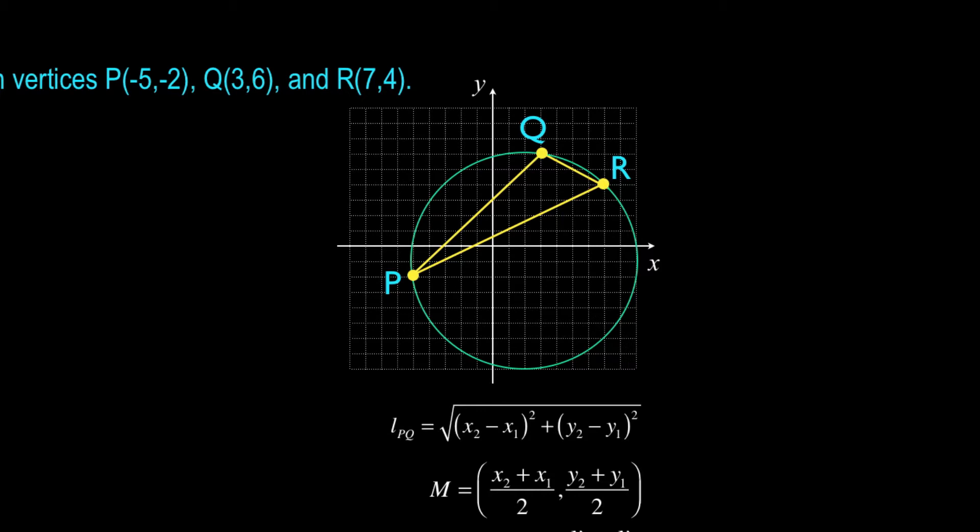The question becomes, how do you locate the center of the circle if you have points P, Q, and R? Well what you need to recognize is that PQ is a chord of the circle, and QR is a chord of the circle, PR is as well, but I'm going to work with the PQ and the QR.